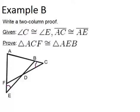It's always a good idea if you have a picture to start marking it up to keep track of what you know. And we also know AC is congruent to AE. So we know that this whole piece is congruent to this whole piece.